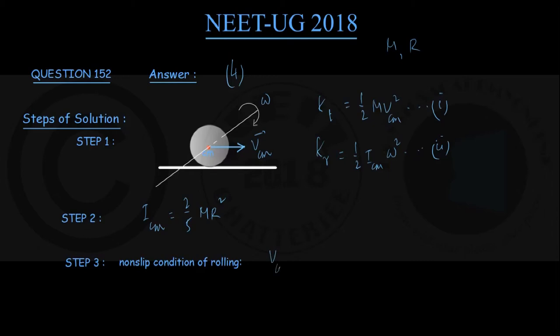The condition for that is: center of mass velocity VCM should be equal to the radius of the sphere R times its angular velocity omega.